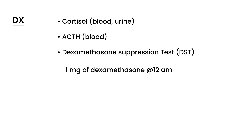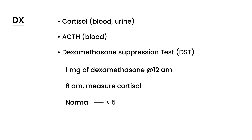In the dexamethasone suppression test, you give the patient a small dose of dexamethasone — a steroid — at midnight, then measure cortisol in the blood the next morning at 8 a.m. In a normal patient without Cushing's, morning cortisol will be low, less than 5, because the steroid causes suppression via a negative feedback mechanism. But in a patient with Cushing's, the cortisol level is not suppressed and will still be greater than 5.